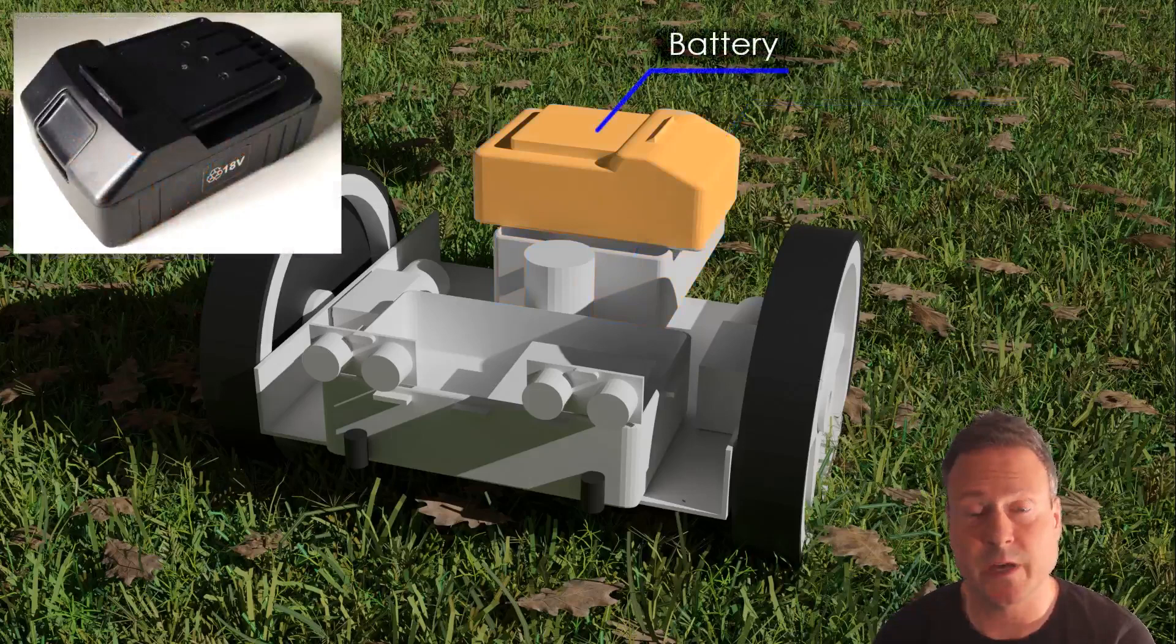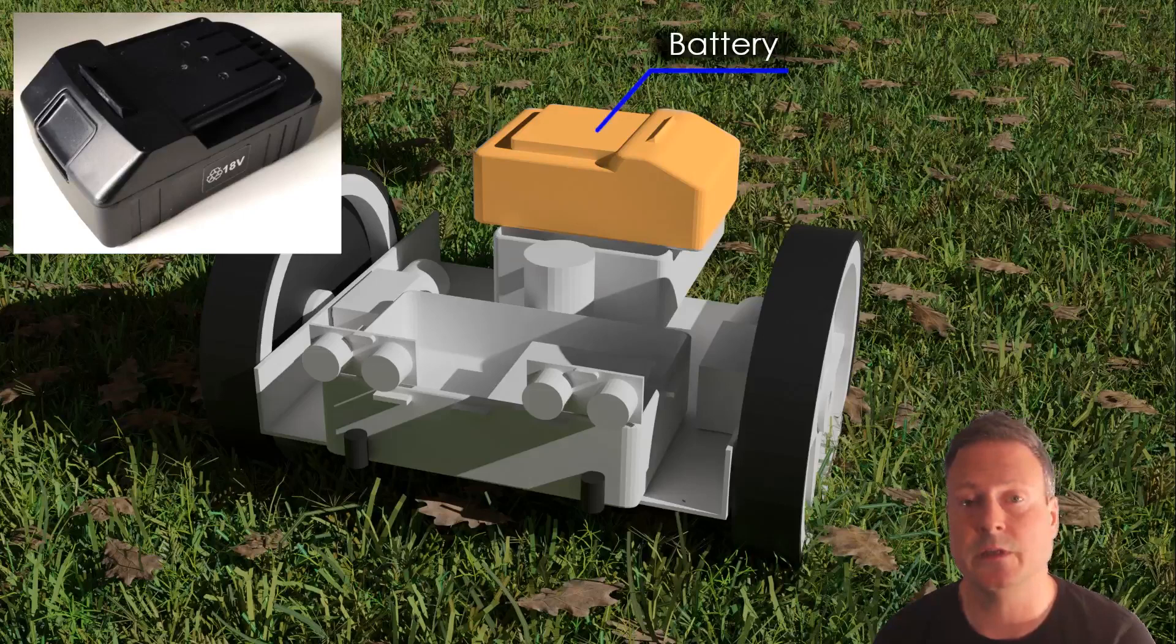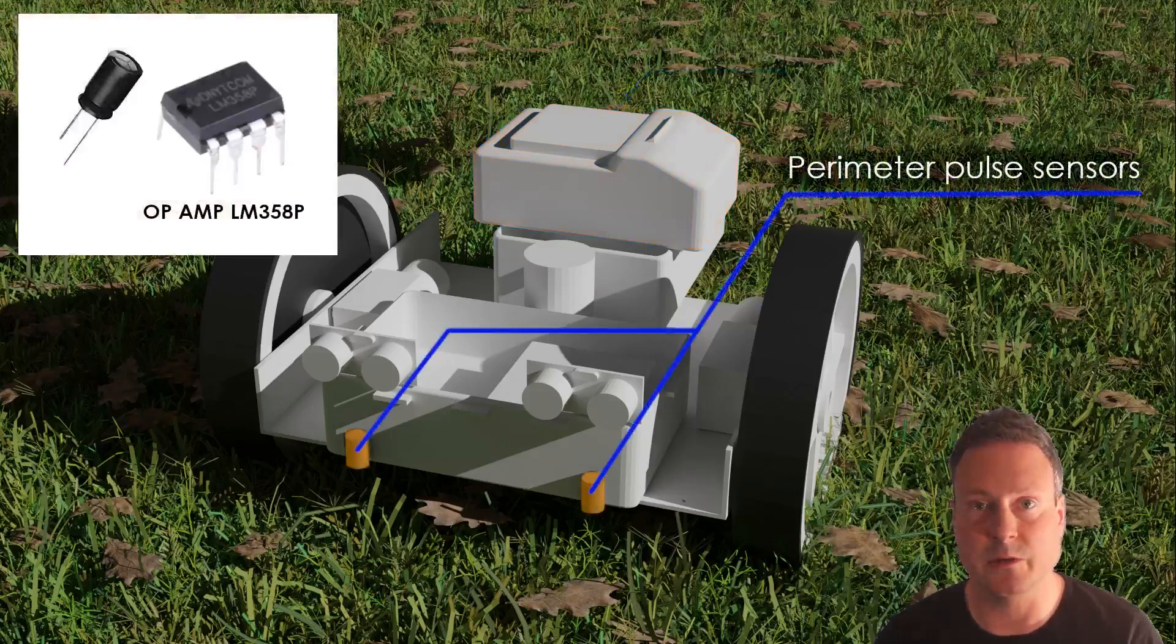The battery is a standard 18 volt power tool battery and I used a charger that came with a tool to charge the battery. I modified the battery and charger so that I can charge the battery through a connector to the robot so I don't have to take out the battery when charging. The future goal is to make the robot self-charging when running low on power.